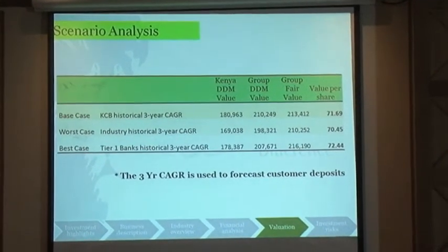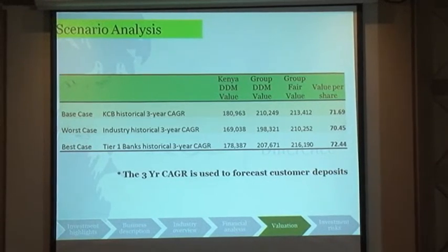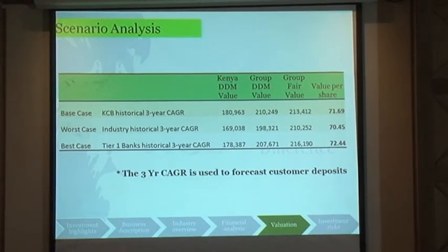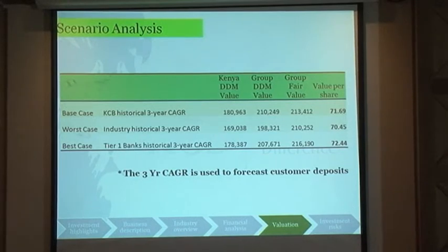Could you please go to your slide on the scenario analysis? In terms of coming up with the base case, the worst case, and the best case, what variables did you put in to come up with these cases? The variable we put in is the average growth rate of customer deposits of KCB Kenya, taken from the banking survey as an average for the last three years. Our base case is KCB's historical three-year schedule on customer deposits, our worst case is the industry growth rate, and our best case is Taiwan Bank's growth rate.